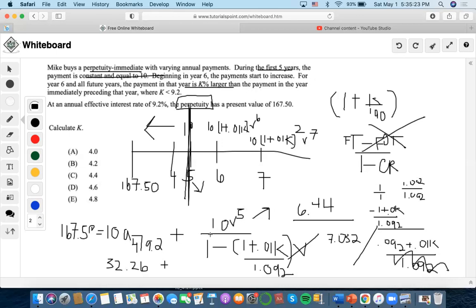Now let's bring this to the other side: 167.50 minus 32.26, which is 135.24. Let's also divide that value by 7.032. Then we take this to the other side by multiplying, then divide by 19.23.